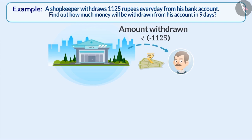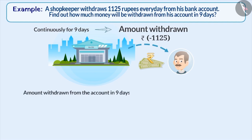The shopkeeper withdraws the same amount continuously for 9 days. Therefore, the amount withdrawn from the account will be 9 into minus 1125. Let's find the result of 9 into minus 1125.